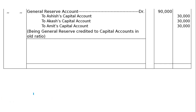Fifth journal entry: General reserve of 90,000 is on the credit side of the balance sheet. General reserve account debited 90,000, to Asis's capital account, to Akash's capital account, to Amit's capital account — being general reserve credited to capital accounts in old ratio. General reserve is distributed to partners' capital accounts in old ratio because it is the result of past years' hard work and business workmanship.